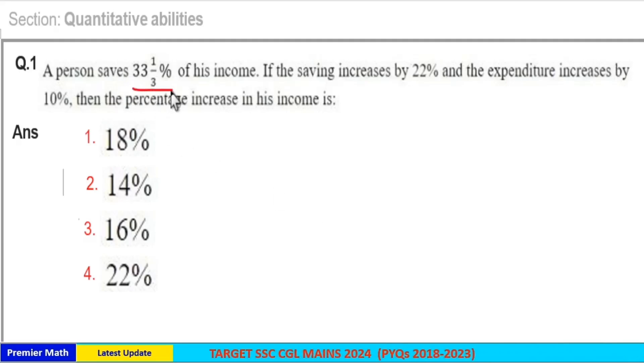A person saves 33 1/3 percent of his income. If the savings increases by 22 percent and expenditure increases by 10 percent, then the percentage increase in his income is: